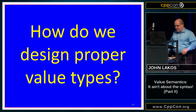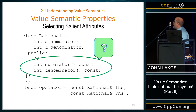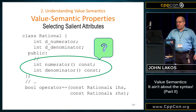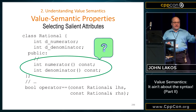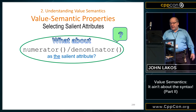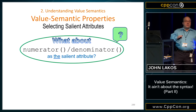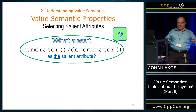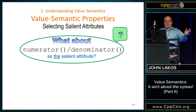So we learned all of these wonderful tidbits in the last class, and now we're going to start to talk about how we design things. Let's look at a true mathematical type — a rational. I've got a numerator and a denominator. Are these the salient attributes, numerator and denominator, or should I pick something else? One possibility is the salient attribute could be the ratio of the numerator and denominator, or some cross product — numerator times denominator on the left equals numerator times denominator on the right.